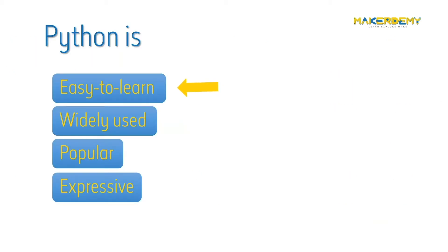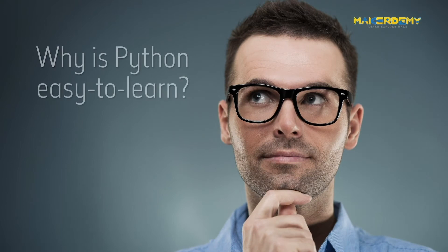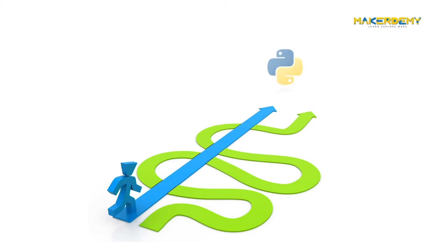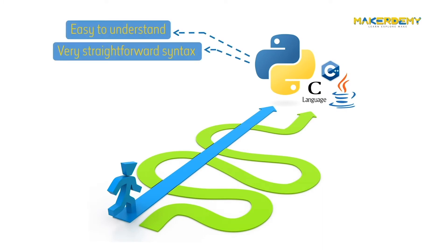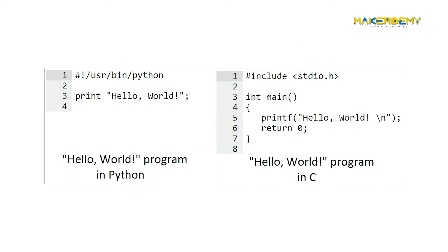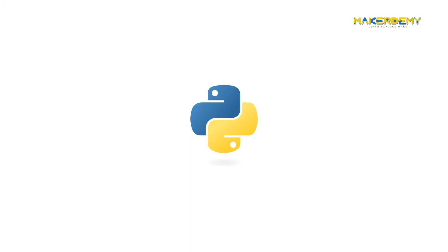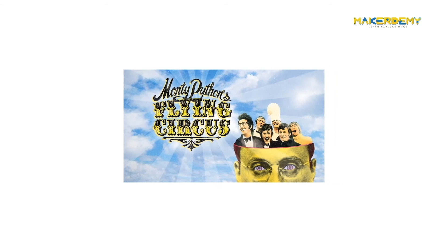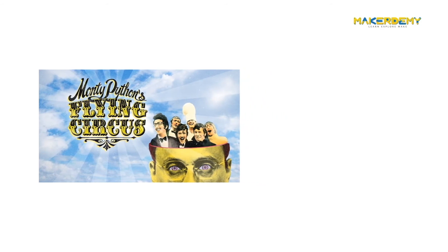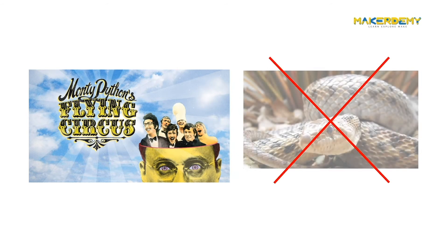One of the reasons for Python's popularity is that it is relatively easier to learn. Learning Python is easier than learning other languages because it is easy to understand and has a very straightforward syntax. The best part is that the code is very small compared to other programming languages. This fascinating language was developed by Guido Van Rossum in the late 1980s. An interesting fact is that it was named after the BBC show Monty Python's Flying Circus, and has nothing to do with the reptile by the same name.